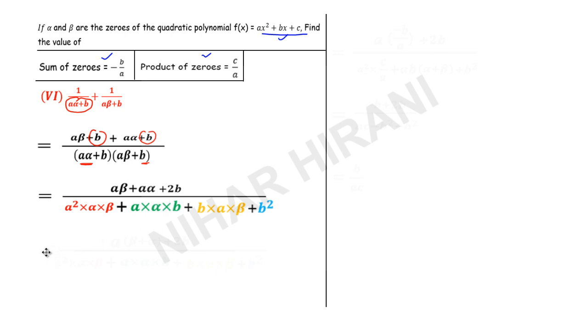Now I will further simplify this. In the numerator, I can take a common for first two terms. So if I take a common, this will be beta plus alpha plus 2b.